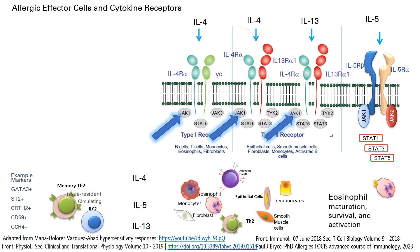In summary, the three cytokines involved in allergic responses — interleukin-4, interleukin-5, and interleukin-13 — all signal through JAK1. This provides an opportunity for inhibiting JAK1 with medication to treat allergic responses.